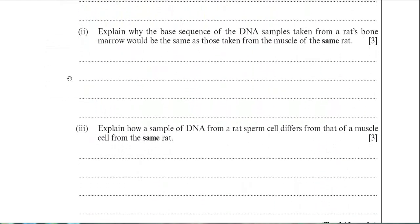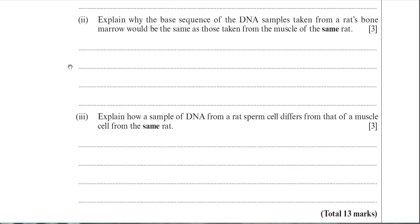Moving on to part two, which is looking at cell division — both parts two and three deal with cell division. The question asks: explain why the base sequence of the DNA sample taken from a rat's bone marrow would be the same as those taken from the muscle of the same rat. You don't need to worry too much about what bone marrow is — you just need to appreciate that you are looking at DNA from two different parts of the rat. The base sequence refers to the order of the nitrogenous bases in DNA.